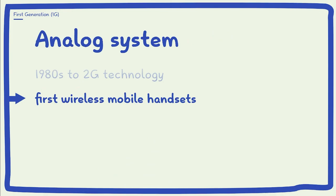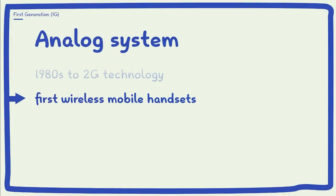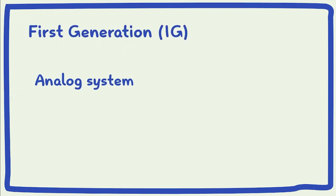1G was the first technology used in wireless mobile phone handsets. As mobile phones became increasingly popular among the general public, it replaced the Zero-G network.